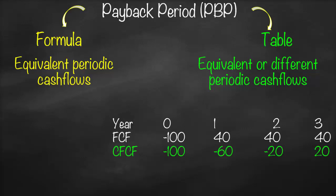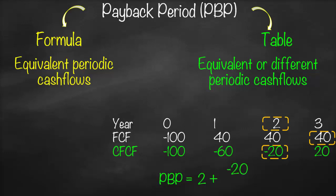Now I'd like to know where our last negative cumulative free cash flow is — it's negative 20, and that occurs in year two. The next free cash flow after that is 40. Therefore, the payback period formula is: the number of years at the last negative cumulative free cash flow, which is 2, plus the absolute value of that last negative cumulative free cash flow (negative 20, remove the negative sign) divided by the next free cash flow, which is 40.